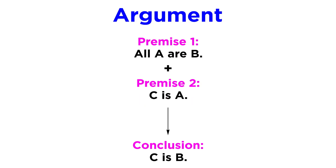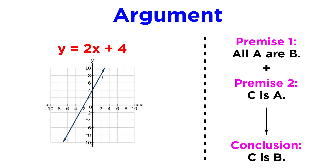And to further avoid any traps language may offer, Aristotle proposed that placeholder symbols, such as a single letter, should substitute proper words in the analysis — what we know today as variables, a concept only introduced to mathematics almost 2,000 years later in the 16th century.